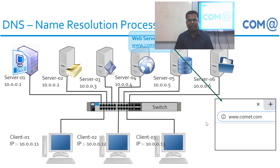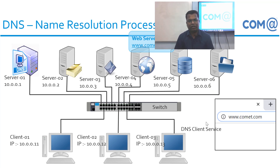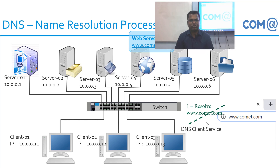Since the web browser doesn't know the target destination IP address, it cannot initiate communication. Whenever we try to access any network resource using a name, the respective application — in this case the web browser — will try to get the IP address for that name. In every computer, a service called the DNS Client Service runs, whether it's a server, desktop, or any computer. The job of the DNS Client Service is to get the name resolved for the requesting application. The DNS Client Service also maintains a cache called the DNS Client Cache, which holds the name and IP address information of computers that have been previously accessed.